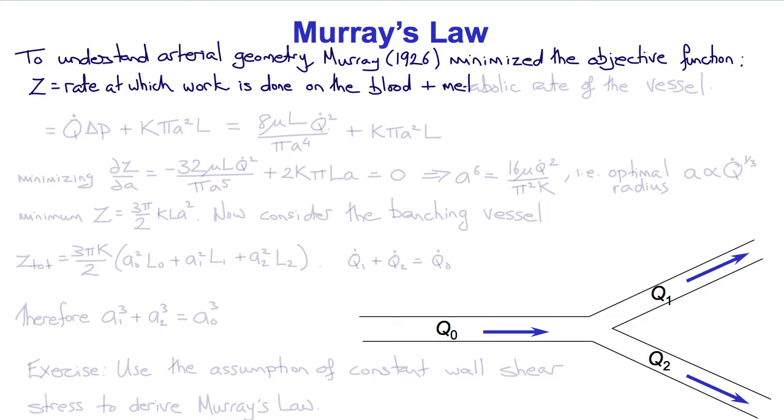So the idea here was that what would be the relationships that would achieve this optimality and would they explain the geometry and branching of vessels? So the rate at which work is done on the blood would be the flow Q dot times delta P. So you'll see this has work per unit time per unit volume. Plus he assumed that the metabolic rate was proportional to the volume of the vessel. So K pi A squared L where A is the radius.